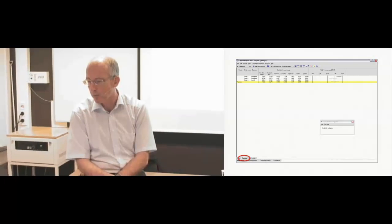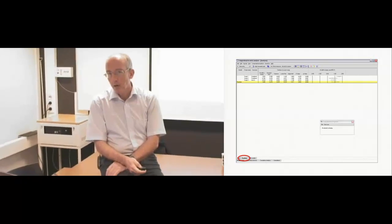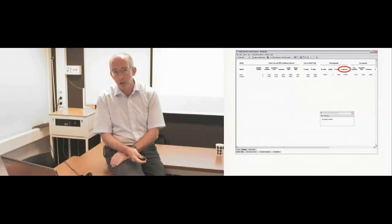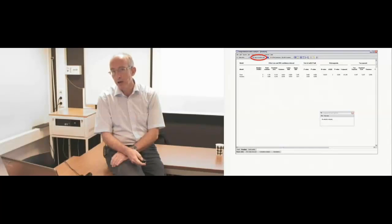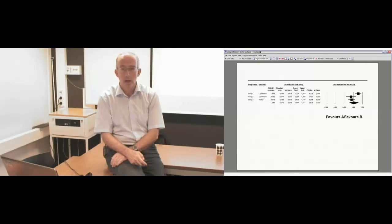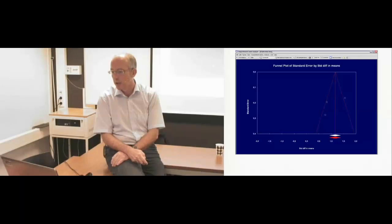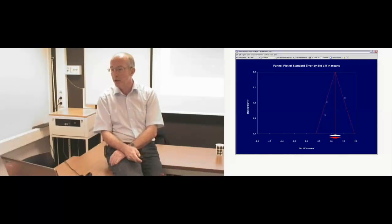Here you see the summary of the meta-analysis with three studies and a pooled outcome. You can click to get a more informative screen showing outcomes for the fixed and random effects models. You also see I-squared, which is an indication of heterogeneity — I'll come back to that later. The nice thing about CMA is that you can directly export a high-resolution forest plot into Word or PowerPoint for your published meta-analysis. You can also examine publication bias — here you see the three studies in a funnel plot, showing whether there are missing studies.